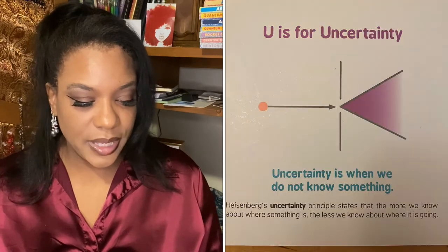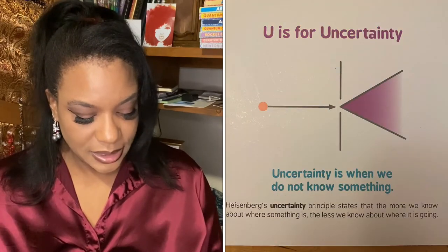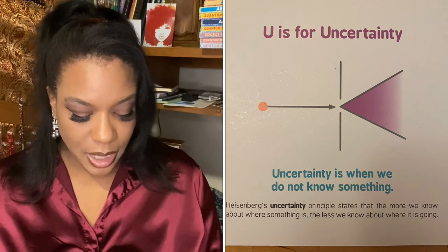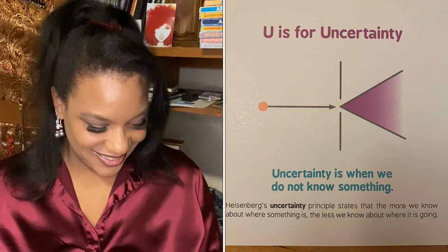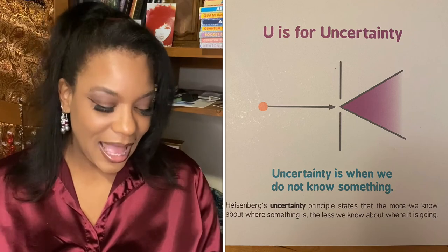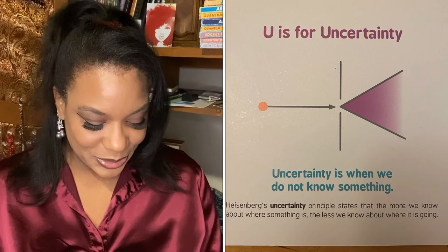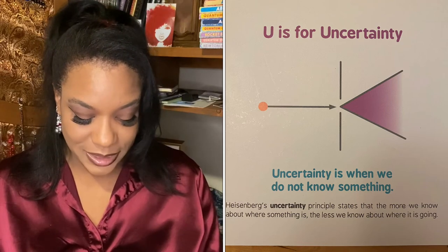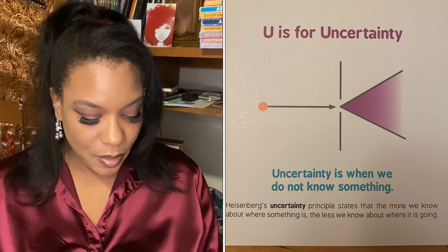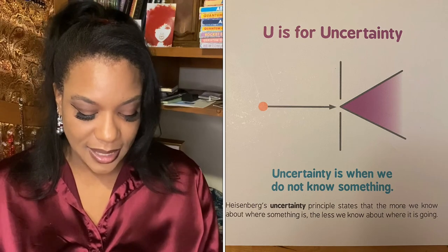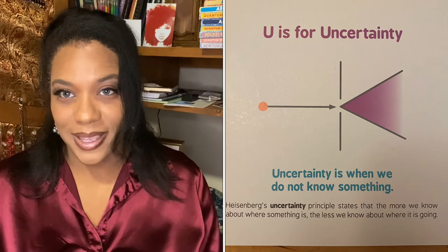U is for uncertainty. Uncertainty is when we do not know something. Heisenberg's uncertainty principle states that the more we know about where something is, the less we know about where it is going.